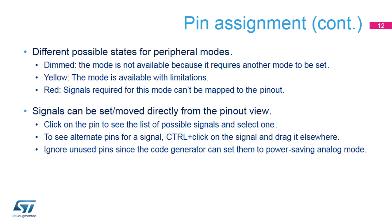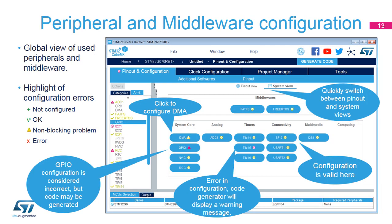It is not necessary to manually set all unused pins to analog — there is a semi-automated step that does this. The Configuration tab of the main window provides an overview of all the configurable hardware and software components that STM32CubeMX can help set up. Each button is displayed with a small icon indicating the configuration state, with the default state being not configured. Clicking on a button for a peripheral or middleware displays its configuration options. Warning signs provide notifications about incorrect configurations, and the peripheral will not work if code is generated in this state. Critical errors are represented by a red X, and the configuration must be modified to continue.